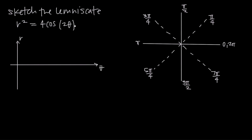As always with polar curves, when we're sketching, we want to take the argument inside the trig function — in this case 2 theta — and set it equal to pi over 2. So we take 2 theta and set it equal to pi over 2, then solve for theta. Dividing both sides by 2, we get theta equals pi over 4.